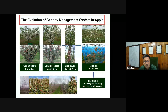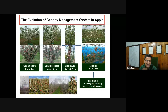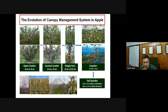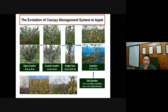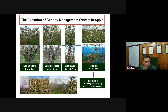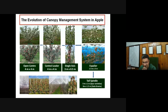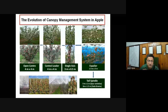Our institute started canopy management for apple with the open center system at 4×4 meter spacing, achieving yields of 30–40 tons per hectare. The central leader system also used 4×4 meter spacing. The single axis system uses 3×0.5 meter spacing. The splay system — a two-dimensional planar canopy — uses 3×1.5 meter spacing. Currently, the most popular and recommended canopy system for high density apple missions throughout India is the tall spindle system, planted at 3×1 meter spacing.